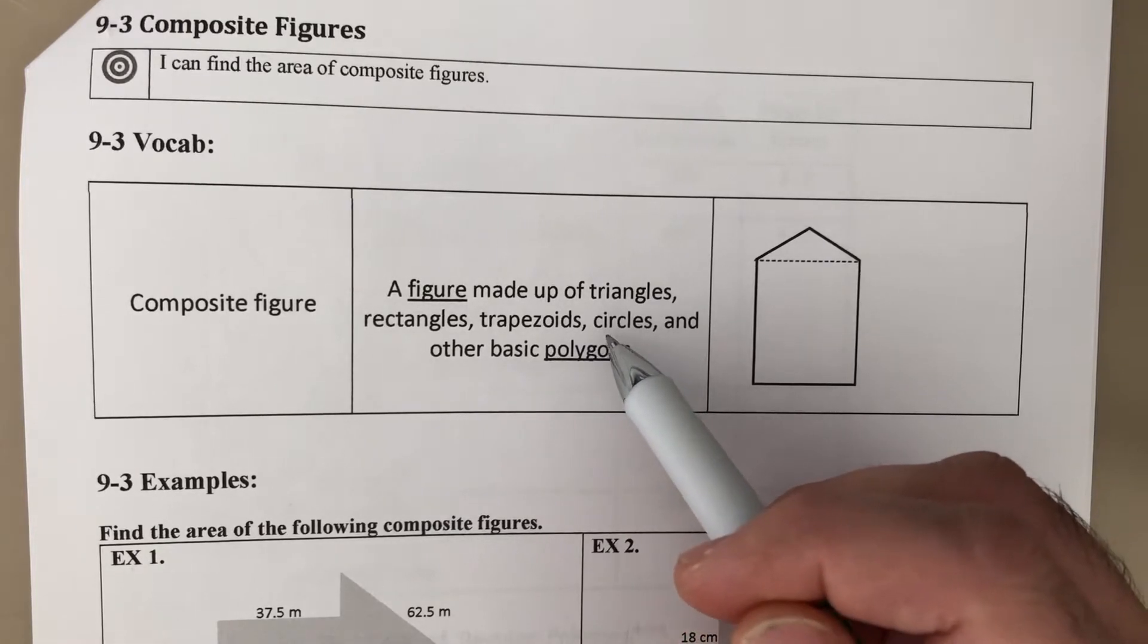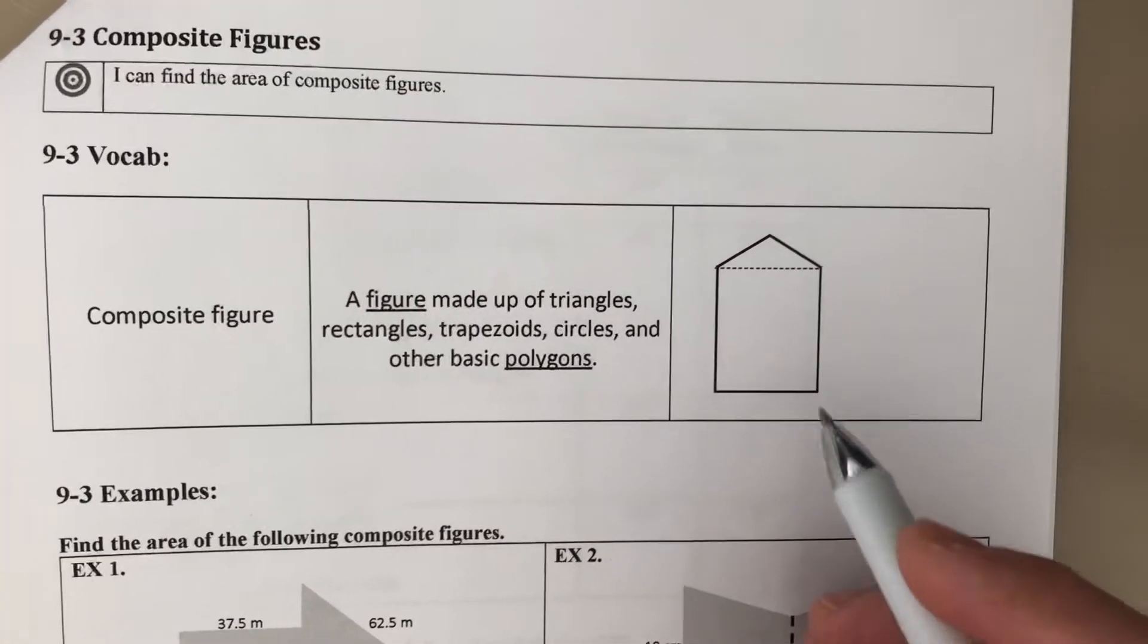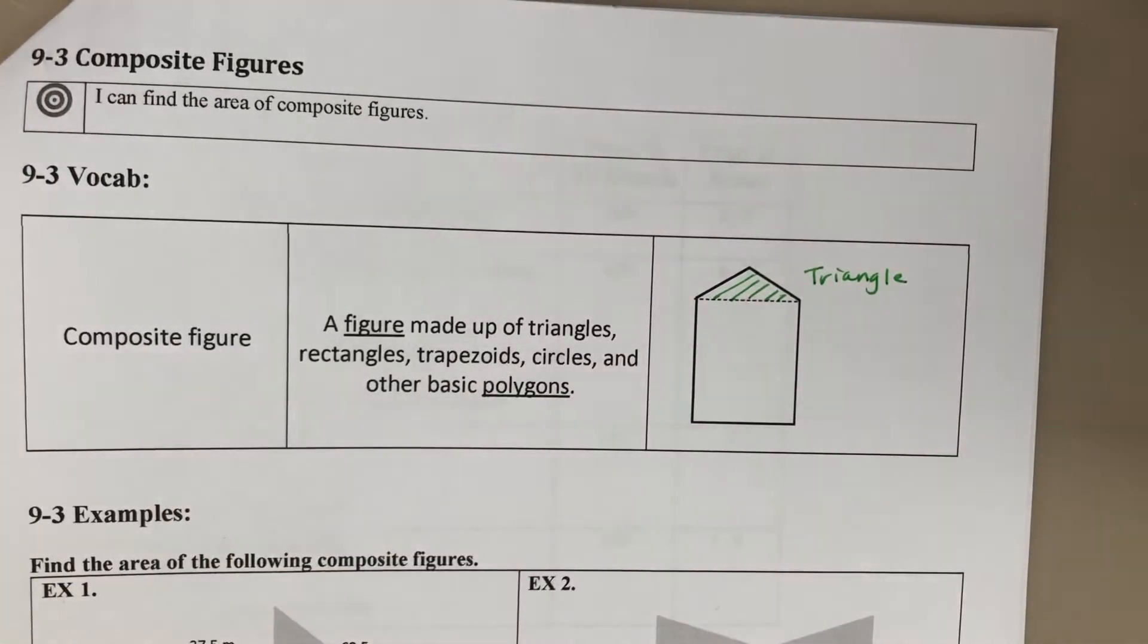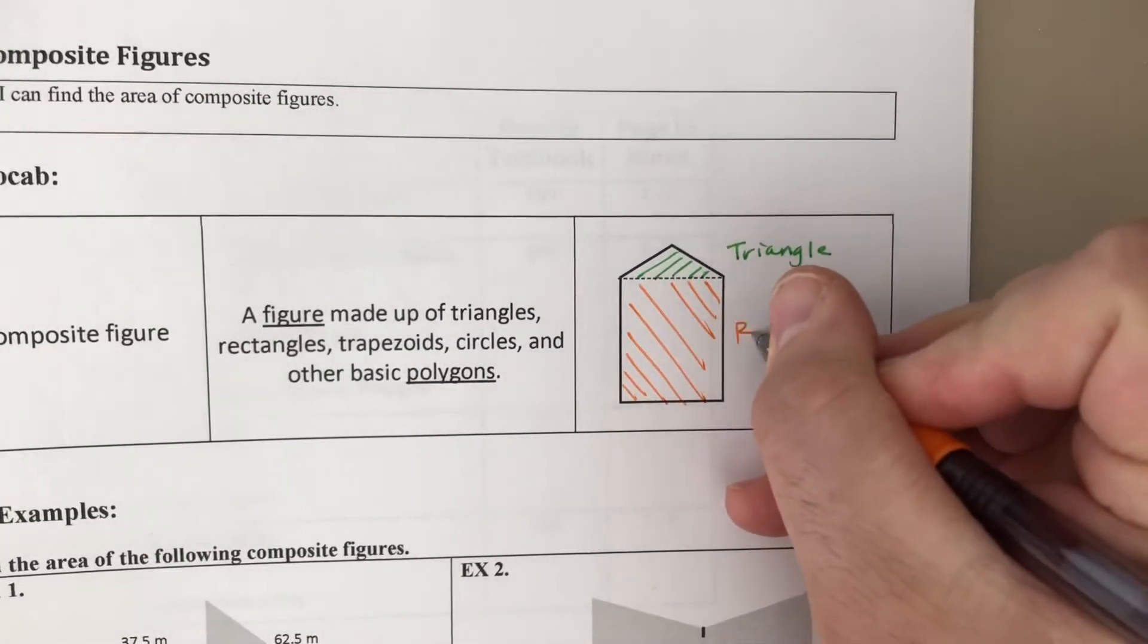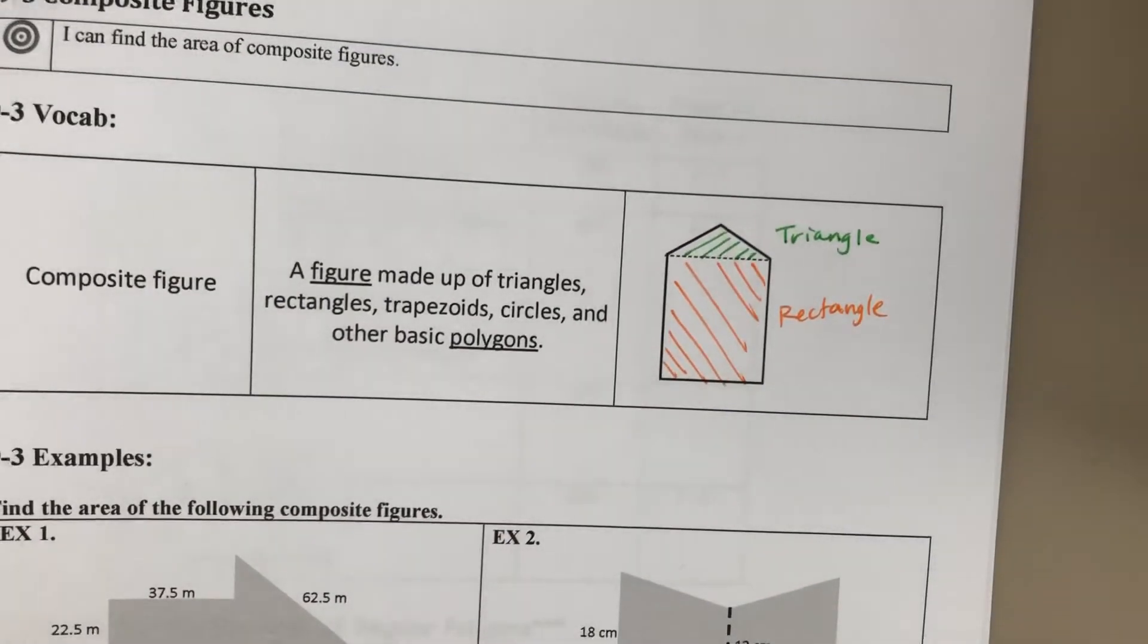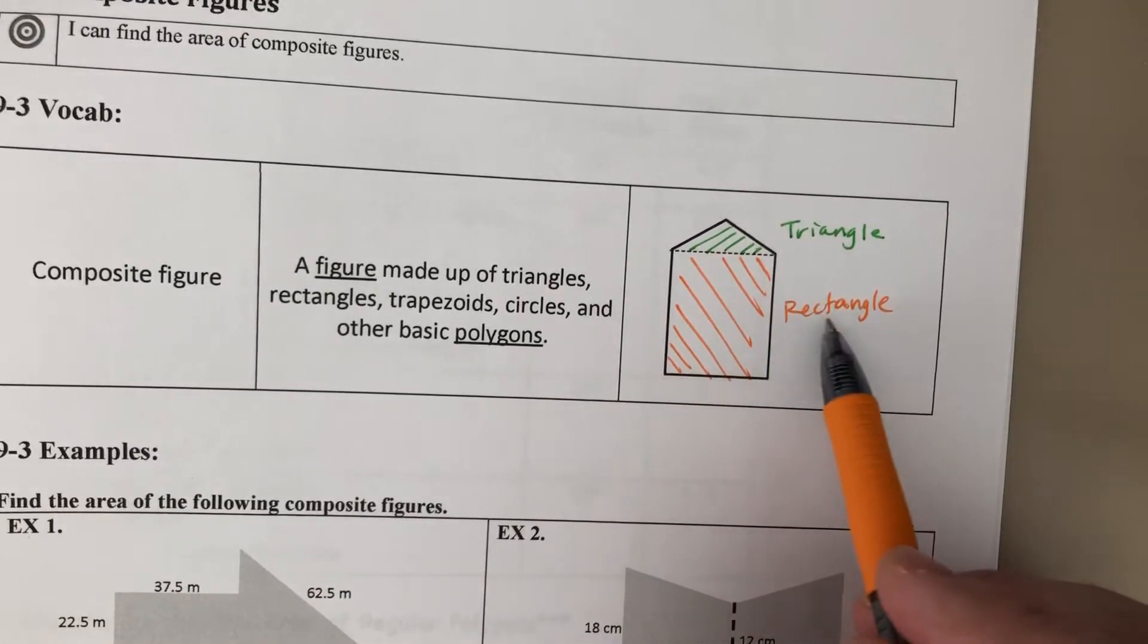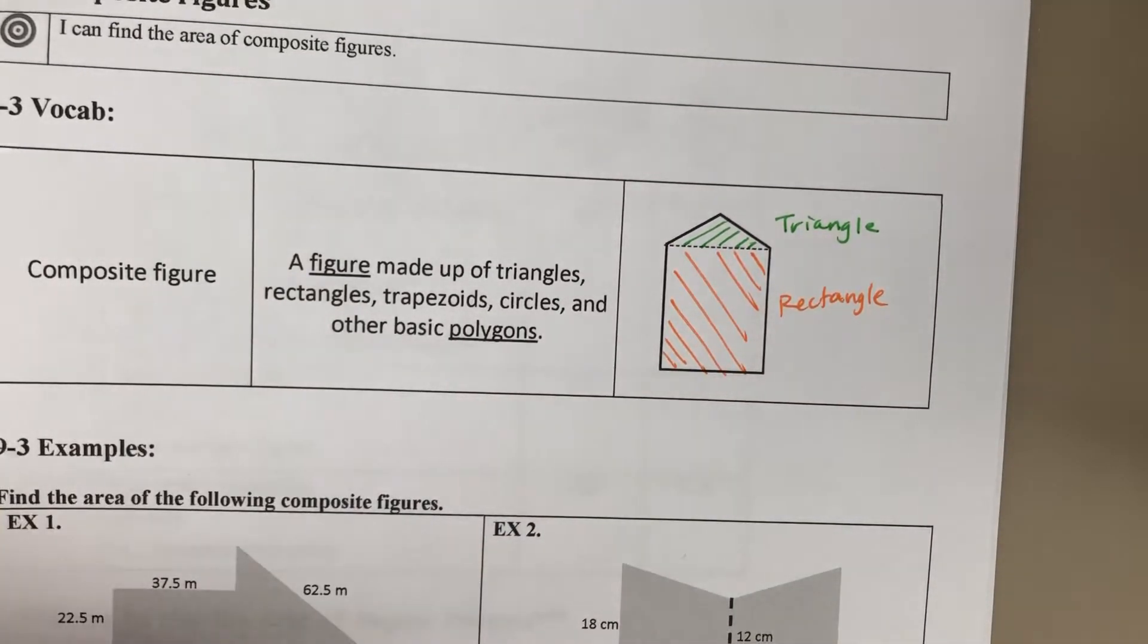And so the best way to find the area of those is to find the areas of the things we know. If you look at this example here we have this triangle on top and then we have this rectangle on the bottom. You know to find the area of this whole thing we would first find the area of the triangle and find the area of the rectangle, add those areas together, and that would get us our area of this composite figure.